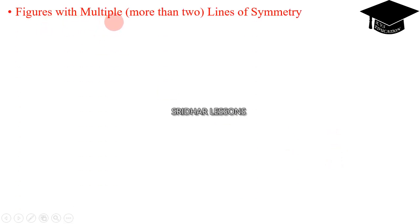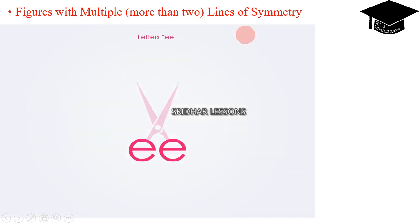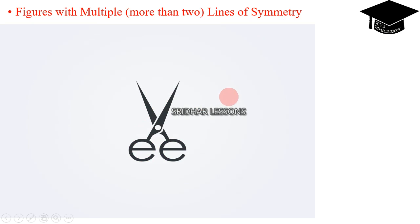Figures with multiple lines — that means more than two lines of symmetry. A circle is the best example. If you can cut this one at any part, we are going to get the symmetry.